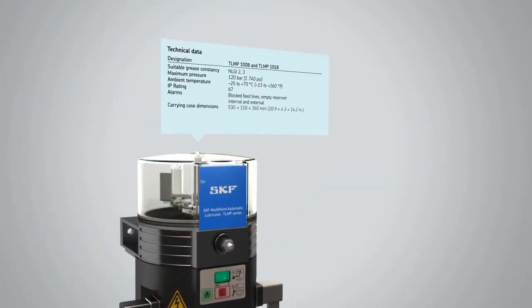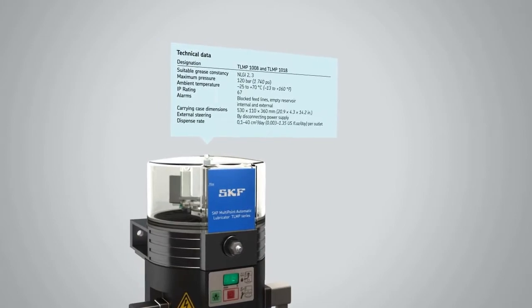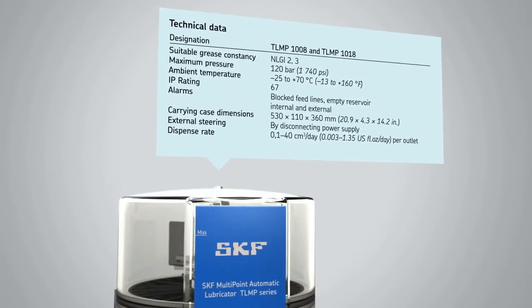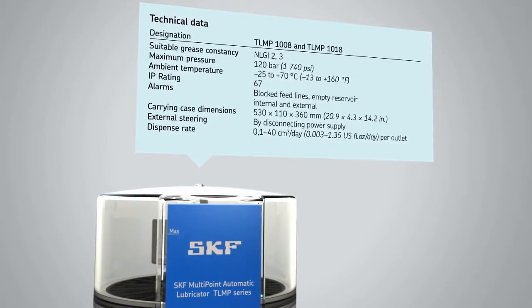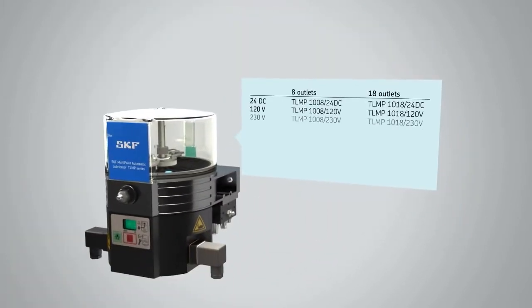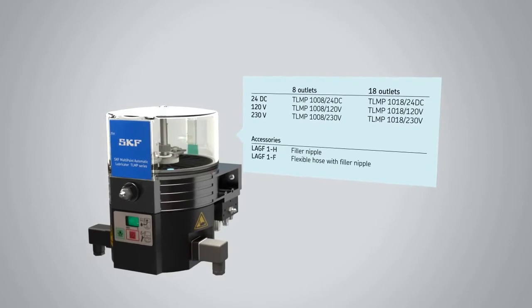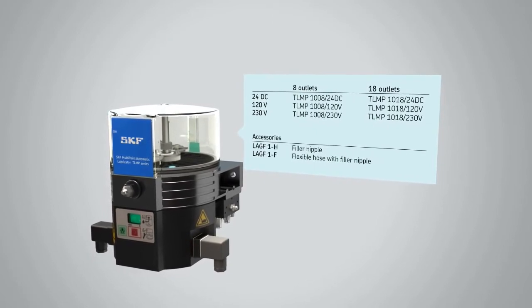The lubricator delivers a maximum operating pressure of 120 bar and functions reliably in temperatures ranging from plus 70 to minus 25 degrees Celsius. The versatile TLMP is available in versions with different voltages.